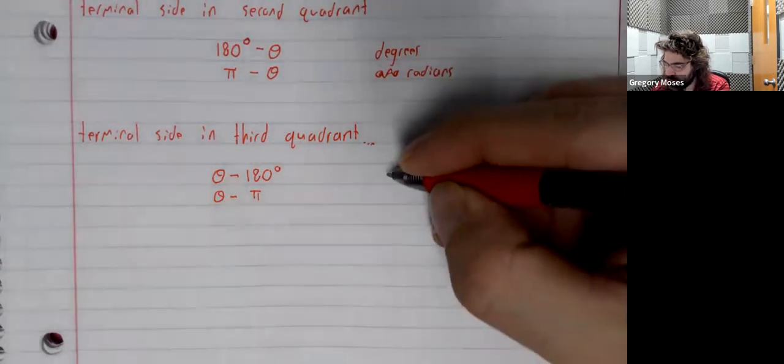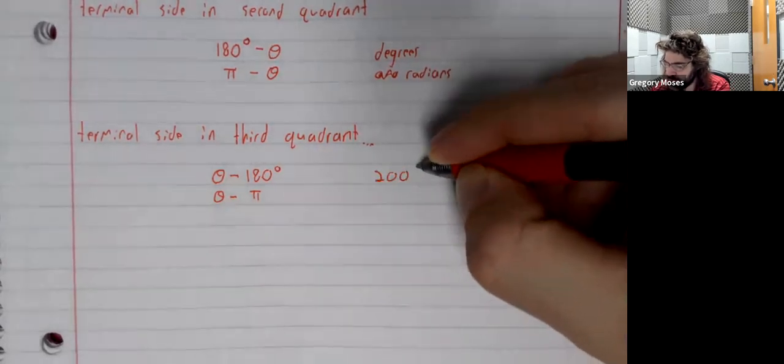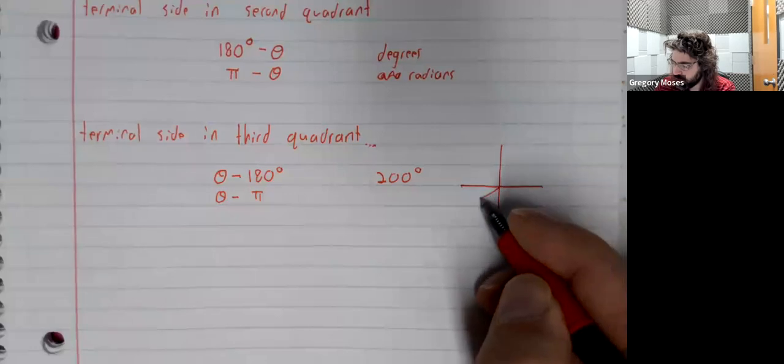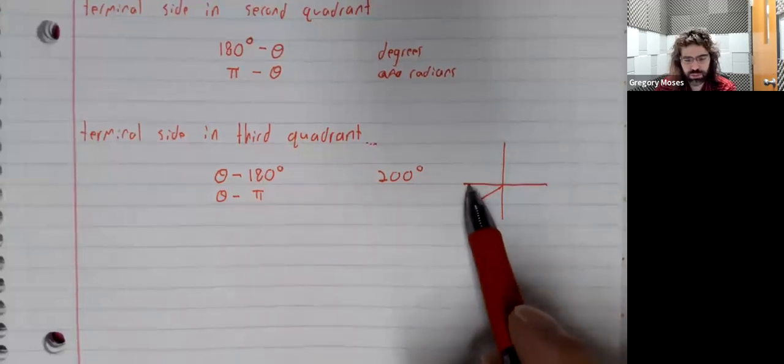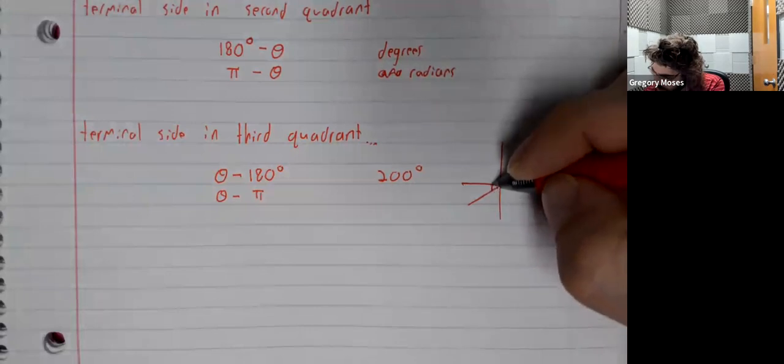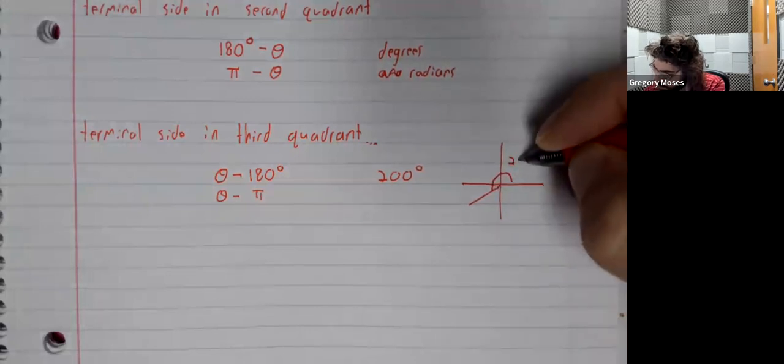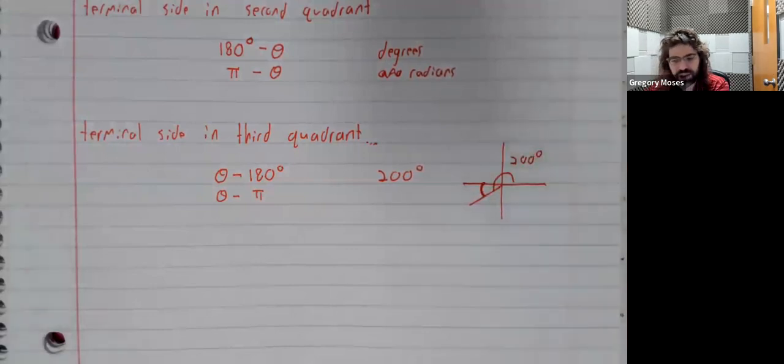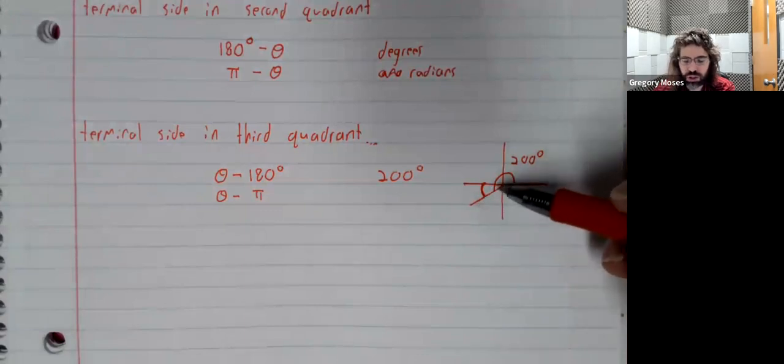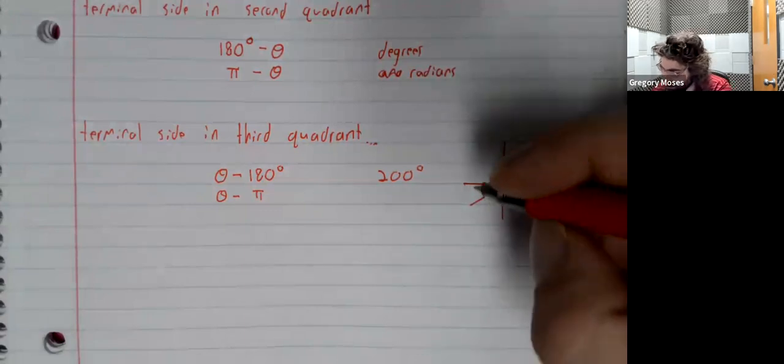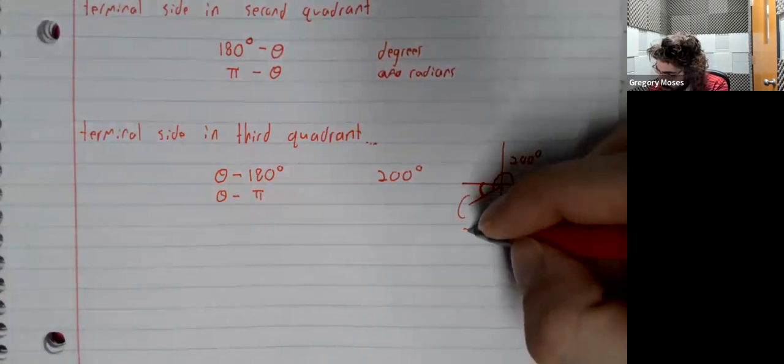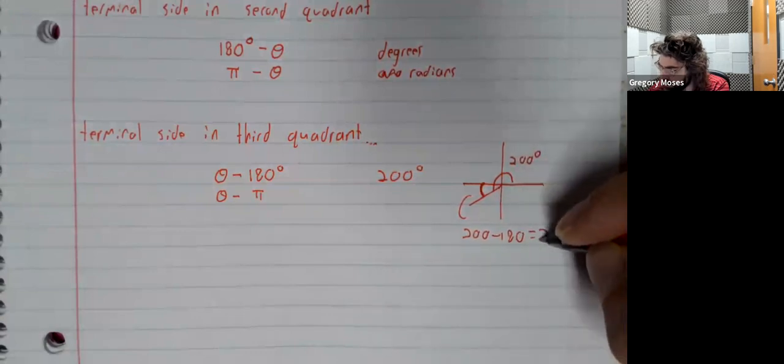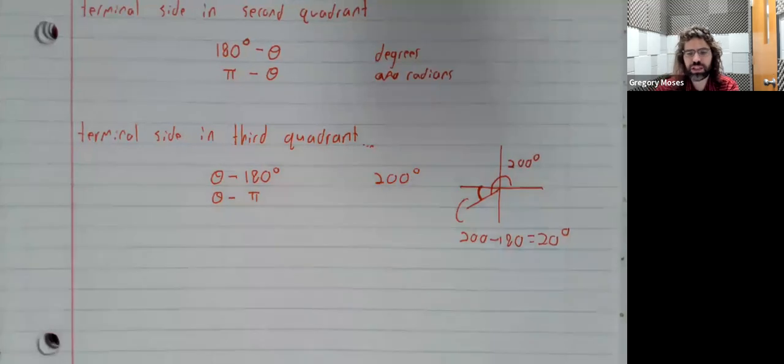So, for example, an angle of 200 degrees. That's in the third quadrant. To find the reference angle, to find this smaller angle that the terminal side makes with the x-axis, it's 200 minus 180, or 20 degrees.